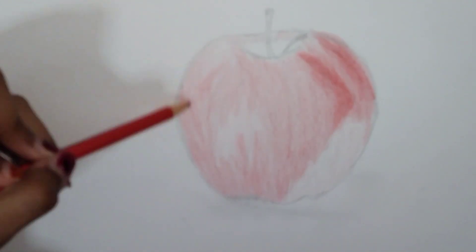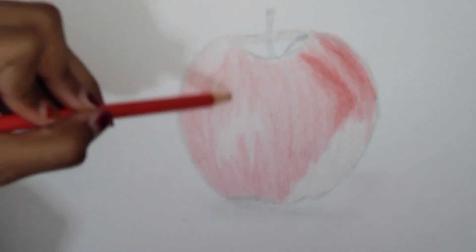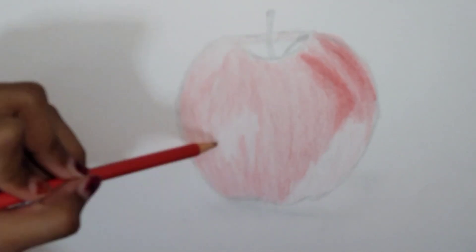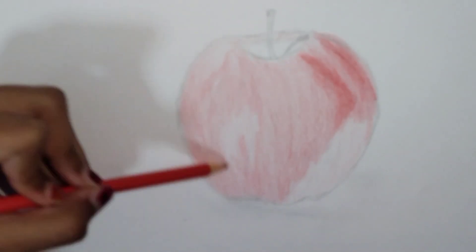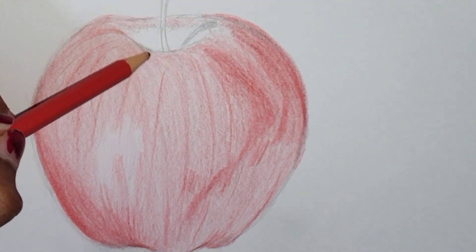Next, you're going to make sure to leave some white space for the highlights of the apple, as this is a very important step. As you can see here, I've made my apple completely red and darkened in a few places.